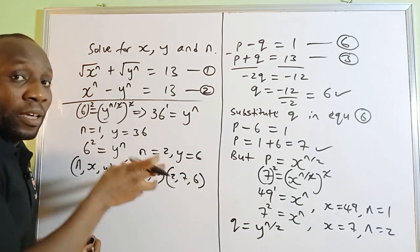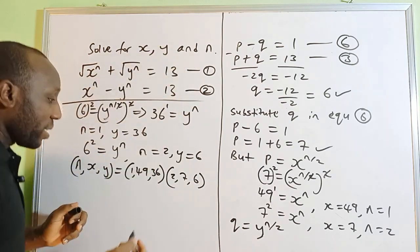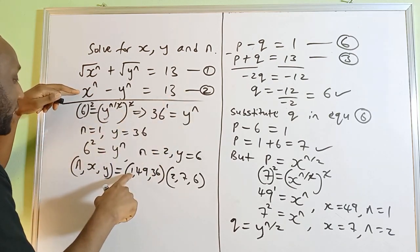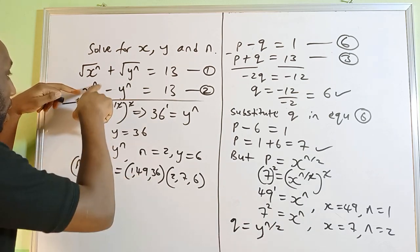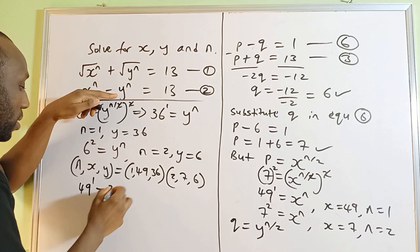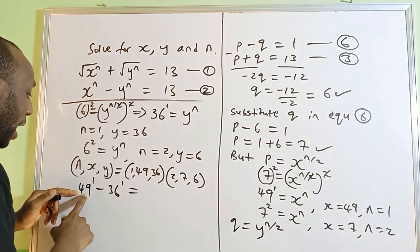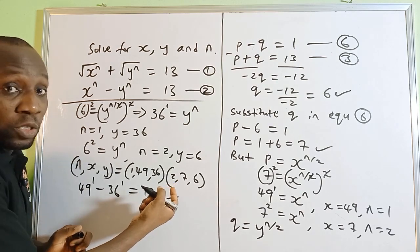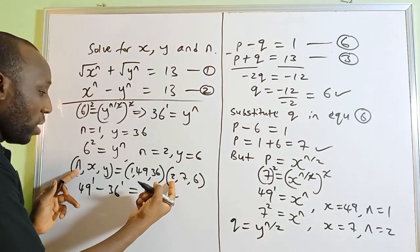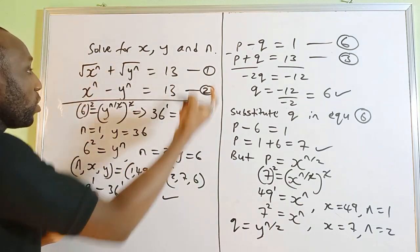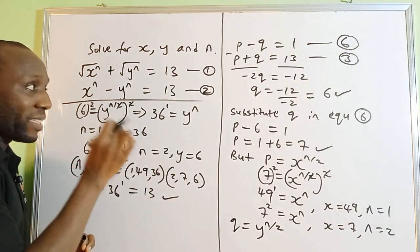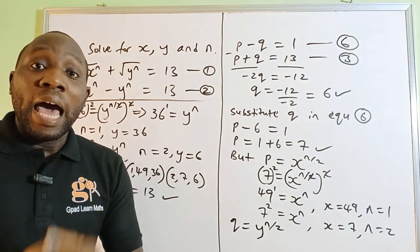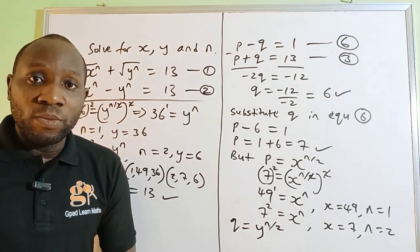Let's verify with the first solution: when x equals 49, y equals 36, and n equals 1. In equation 2: 49 raised to 1 minus 36 raised to 1 equals 49 minus 36, which equals 13. That checks out. Try the second solution too — put n equals 2, x equals 7, and y equals 6 into the equations and you'll see they are satisfied. If this video was helpful, please subscribe, like, and share. See you in the next one — stay blessed!